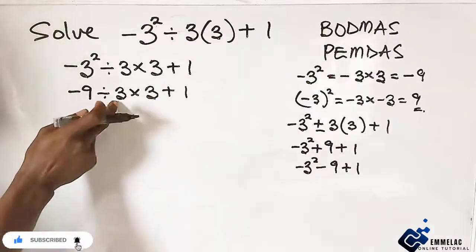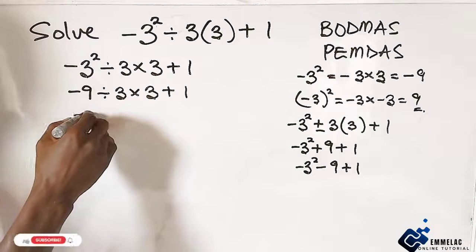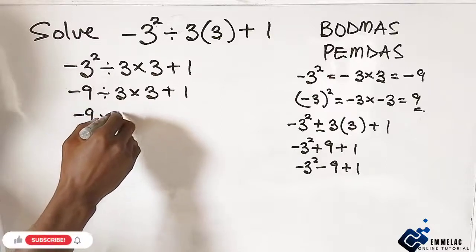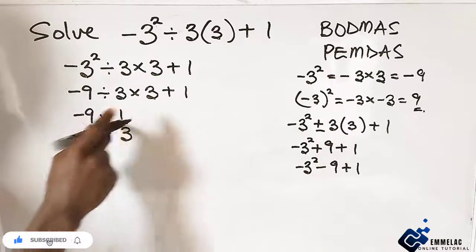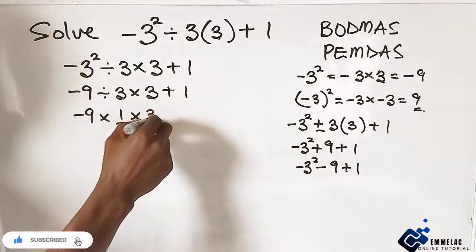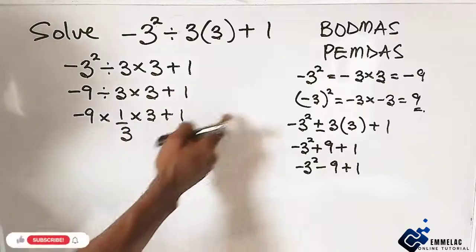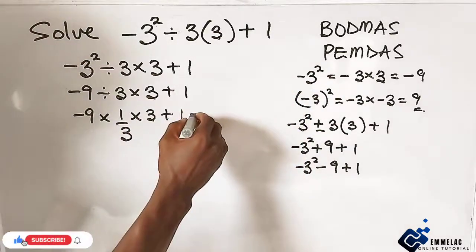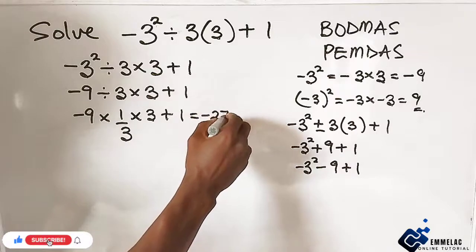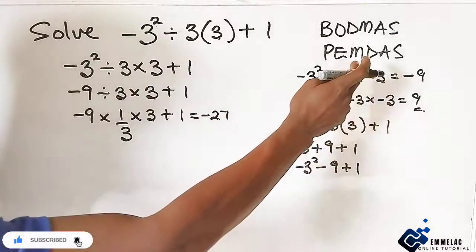Now in this case, you can multiply as I said earlier, you have -9 times 1 over 3 because division sign is the inverse of multiplication times 3 times 3 + 1. Now in either of this case now, what we multiply through, here we have -27. Now we have -1 using this one.